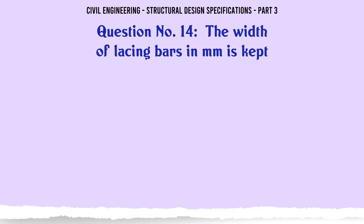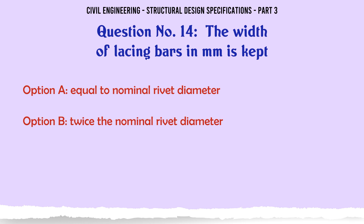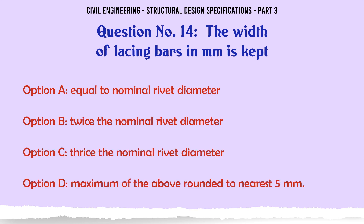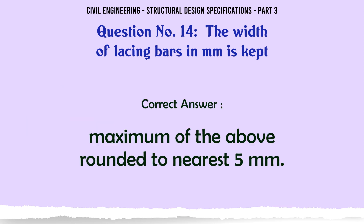The width of lacing bars in mm is kept: a. Equal to nominal rivet diameter, b. Twice the nominal rivet diameter, c. Thrice the nominal rivet diameter, d. Maximum of the above rounded to nearest 5 mm. The correct answer is: maximum of the above rounded to nearest 5 mm.